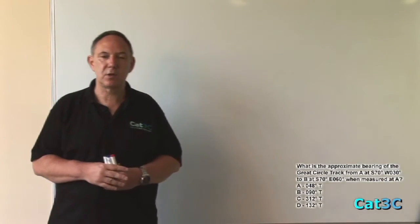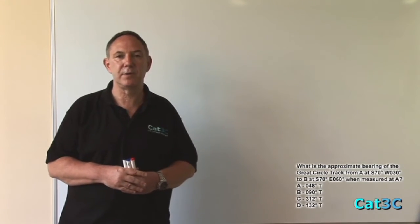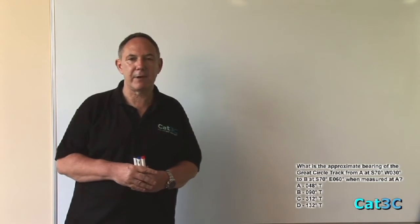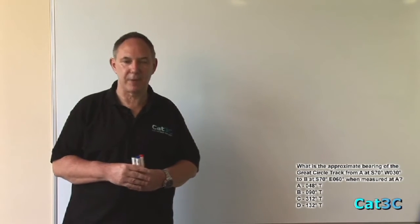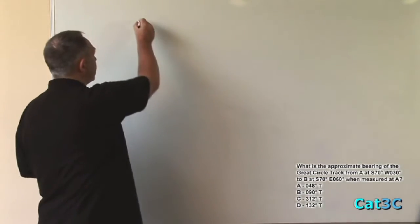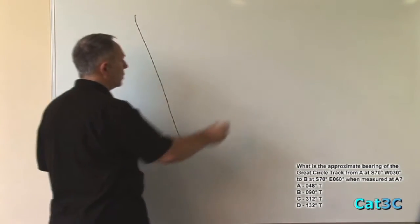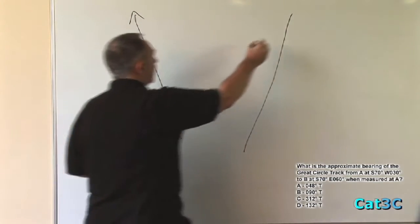When we are trying to solve these convergency problems, the first thing we need to do is to draw a very simple diagram. That diagram only consists of the two meridians of longitude and the Great Circle track. In the Southern Hemisphere, you remember that the meridians converge towards the South Pole and diverge towards the North Pole.